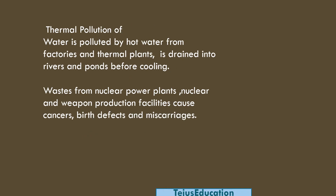Thermal pollution happens when hot water from factories and thermal plants is drained into rivers and ponds before cooling. As a result, marine life gets affected — fish will die, along with any other marine life in that particular water body.